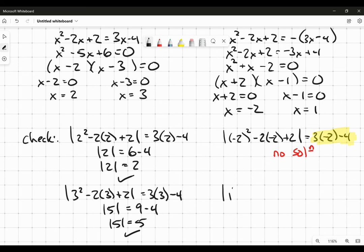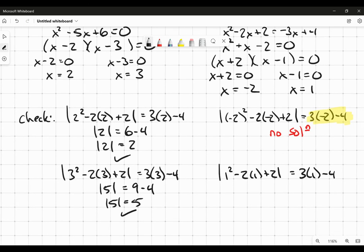Let's try 1. One squared minus 2 times 1 plus 2. Does that equal 3 times 1 minus 4? Well, 1 squared is 1. So 1 minus 2 is negative 1, plus 2 is 1. So it's the absolute value of 1. Three minus 4 is negative 1. No, that is not true. Once again, the absolute value would be producing a negative result, so that doesn't work.